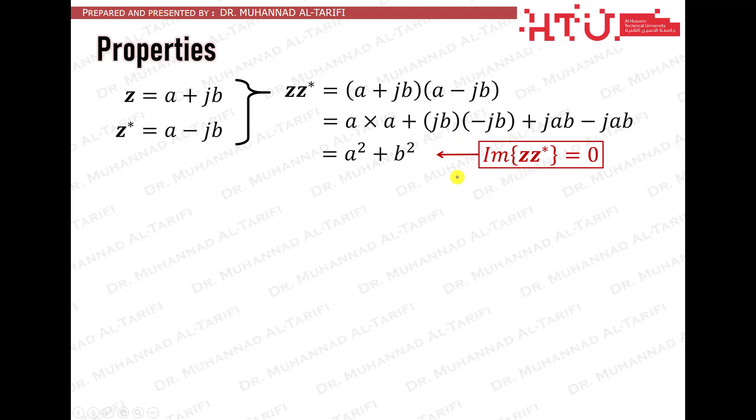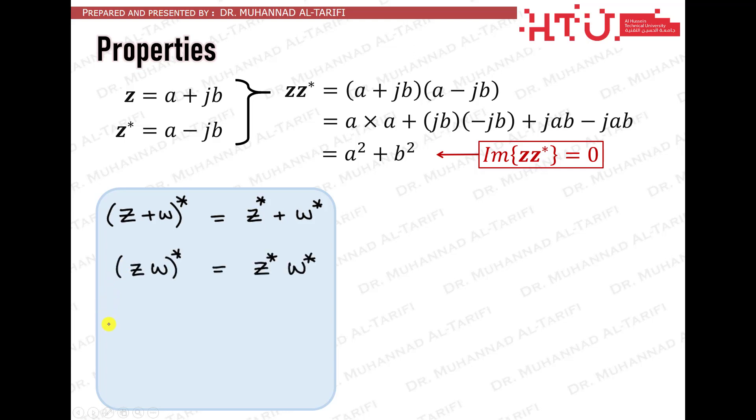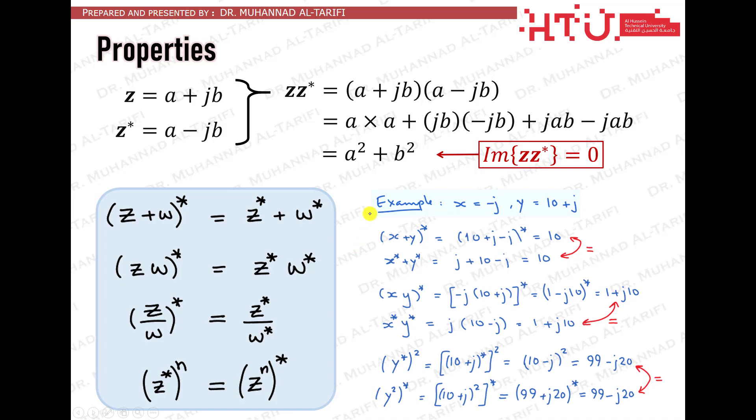Here are some properties in regards to applying the conjugate operation alongside arithmetic operations such as summation, multiplication, division, and powers. The proofs of these properties are rather easy, but the properties themselves might come really handy in some situations. Here is an illustrative example for your reference.